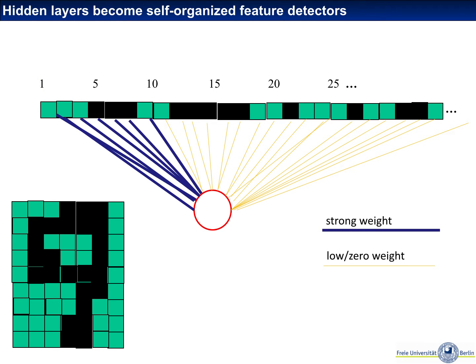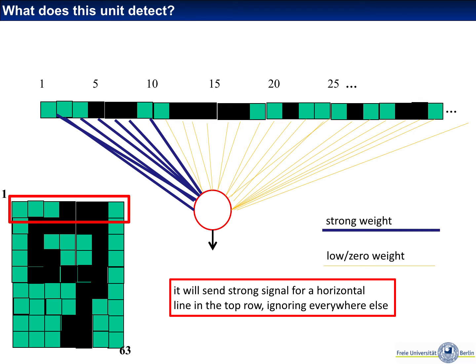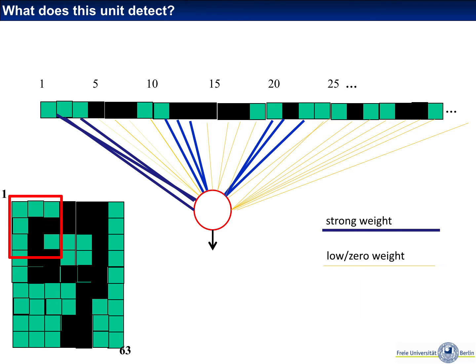For this we can ask the question: how is it connected to its previous neurons in the previous layer? Suppose it has a strong connection where there's a blue line and a weak connection where there's a thin yellow line, and suppose it has strong connections to all the pixels in the first row. In this case, this neuron is basically a feature detector for a horizontal line in the first row of the image.